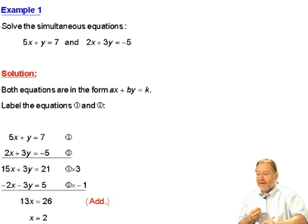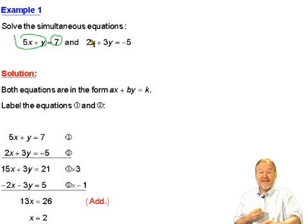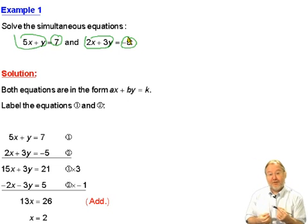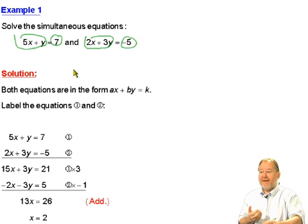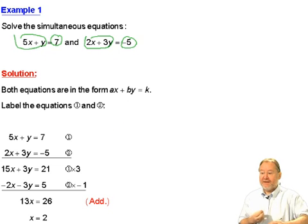That when we put them into this equation here, the left hand side will balance with the right hand side. Also, the same numbers when we put in for x and y will make the left hand side of this equation balance with the right hand side. That's what we mean simultaneously. It happens on both equations.